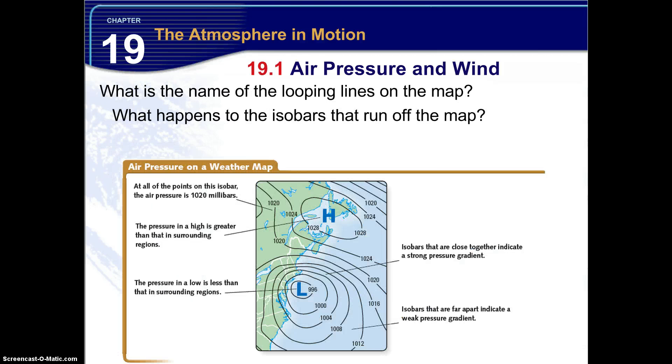So what is the name of the looping lines on this weather map? Isobars. Very good. Now what happens to the isobars that run off the map? Do they just stop? No, they eventually connect beyond the borders of the map.